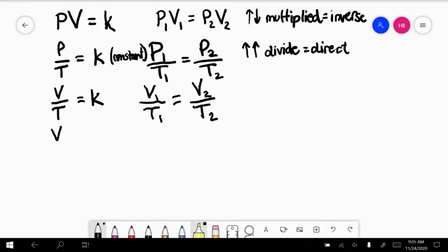And the last one I think they talked about was Avogadro's Law. This is volume and number of moles. These are also divided by each other. That means as one goes up, the other one will go up in response.